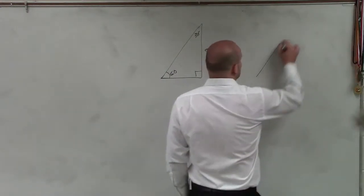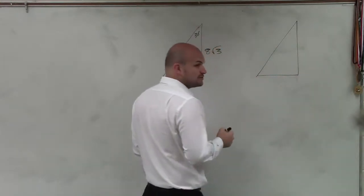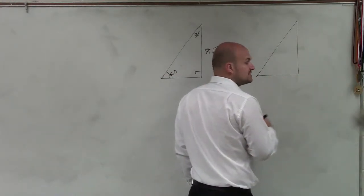And remember guys, these are what we call our special right triangles. And one of the special right triangles that we came up with was the 30-60-90.